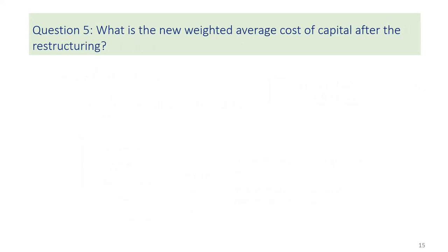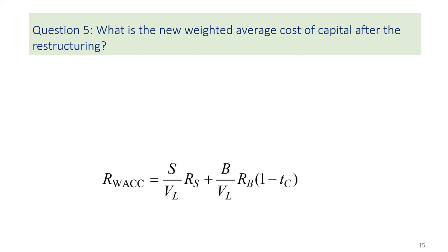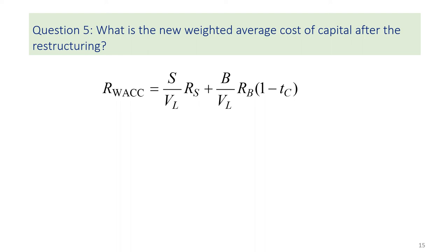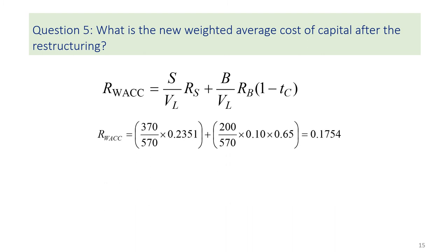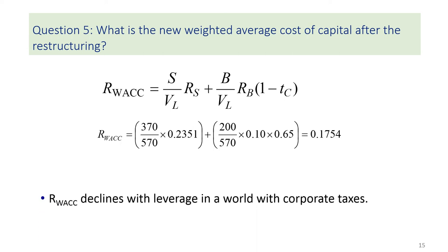Question 5: What is the new weighted average cost of capital after the restructuring? We can use the formula in MM Proposition 2 to calculate WACC. The cost of capital is weighted by the proportion of financing with debt and equity, and the sum of weights equals 1. Cost of debt is multiplied by 1 minus tax rate due to the tax shield. WACC declines with leverage in a world with corporate taxes. The unlevered firm's cost of capital equals the unlevered cost of equity at 20%, as there is no debt financing, while the levered firm's WACC is lower at 17.54%.